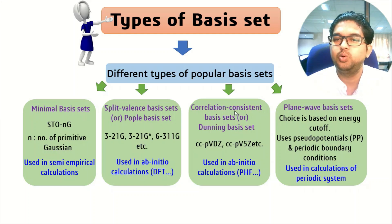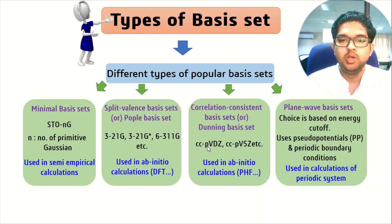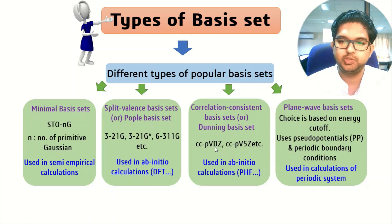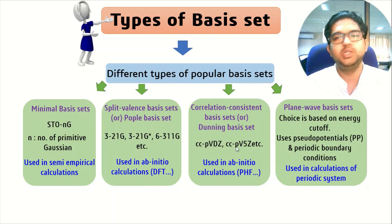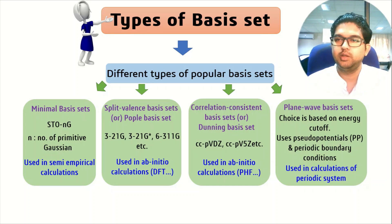Then we have the correlation consistent basis set. Here we use CC correlation consistent notation — CC-PVT Z, DZ, and different functionals. This is also used in ab initio methods. Generally we use this kind of basis set in the post-Hartree-Fock methods because there we need to get more correlation energy.